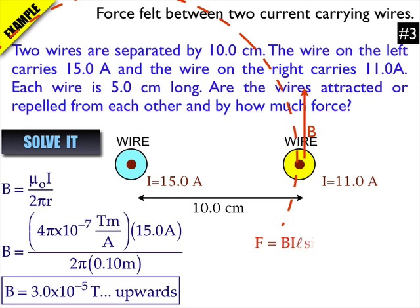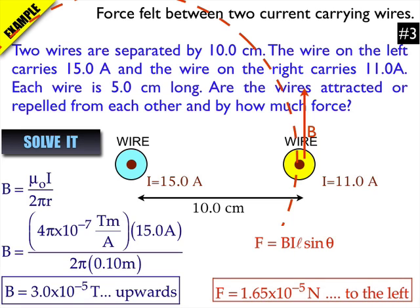Now to find the force, I'm going to use BIL sin θ to find the force. So to do that, I'm going to use the strength of the magnetic field that I just calculated for B, the current through the yellow wire, which is 11 amps, and then the distance, or the length of the wire that's in the magnetic field, which is 5 centimeters.